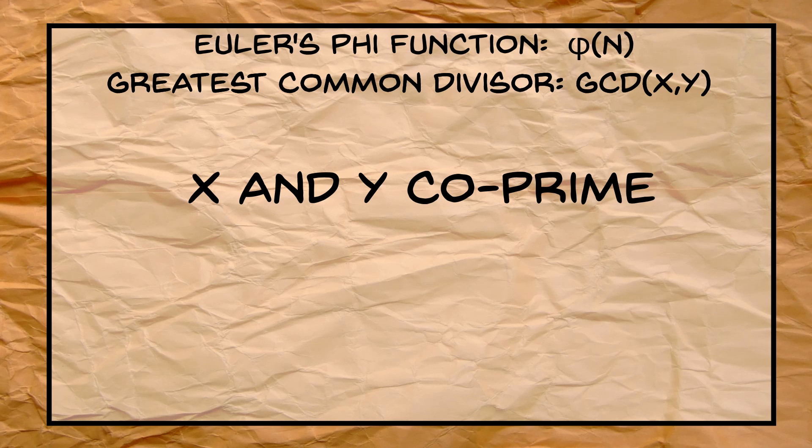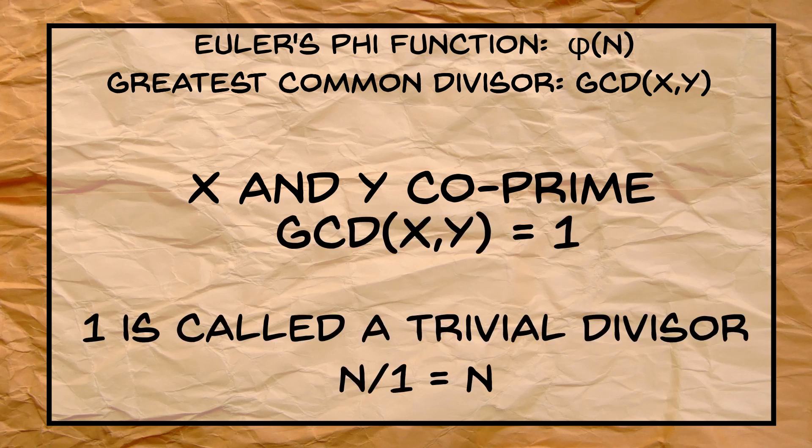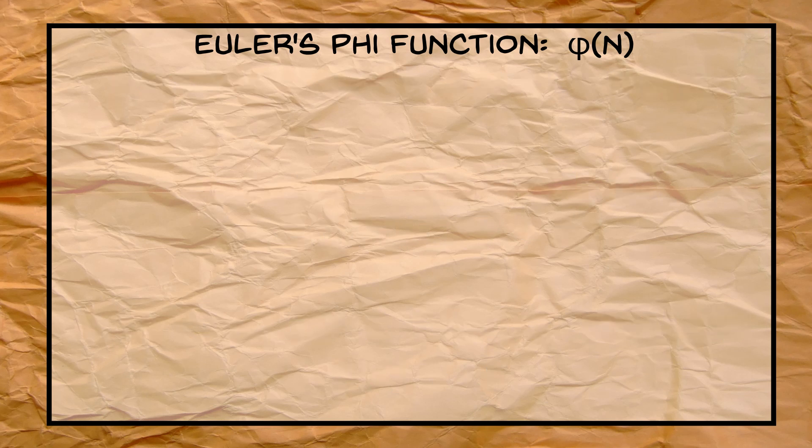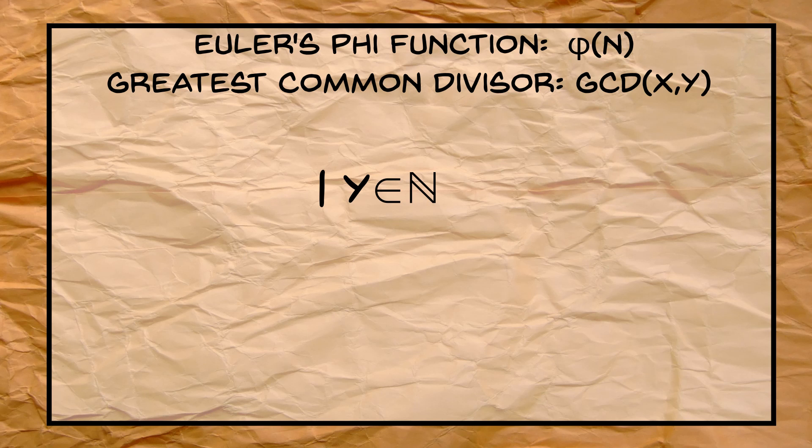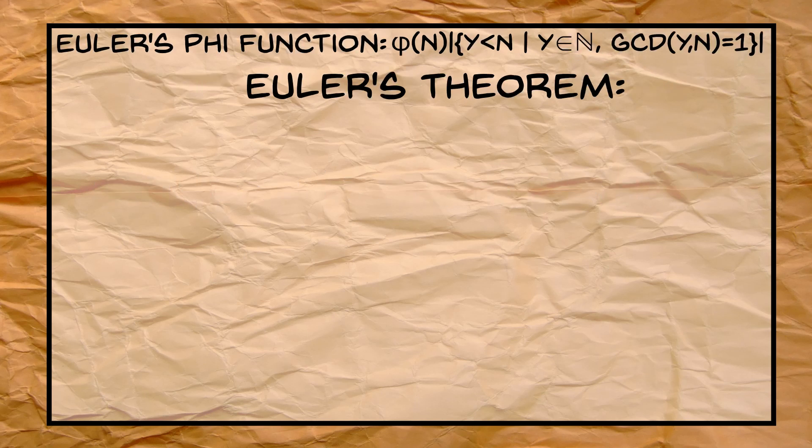What is of interest to us is when two integers are co-prime. This means that the only common divisor is 1, but this is trivial, because for any integer, n divided by 1 is n. Now Euler's phi function, denoted phi of n, counts all positive integers smaller than n that are co-prime to n.